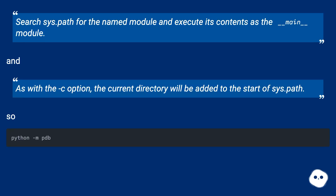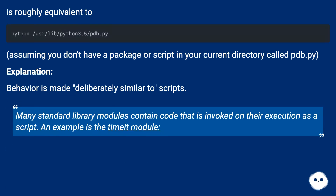Search `sys.path` for the named module and execute its contents as the `__main__` module. And as with the `-c` option, the current directory will be added to the start of `sys.path` — so it is roughly equivalent, assuming you don't have a package or script in your current directory called `pdb.py`.